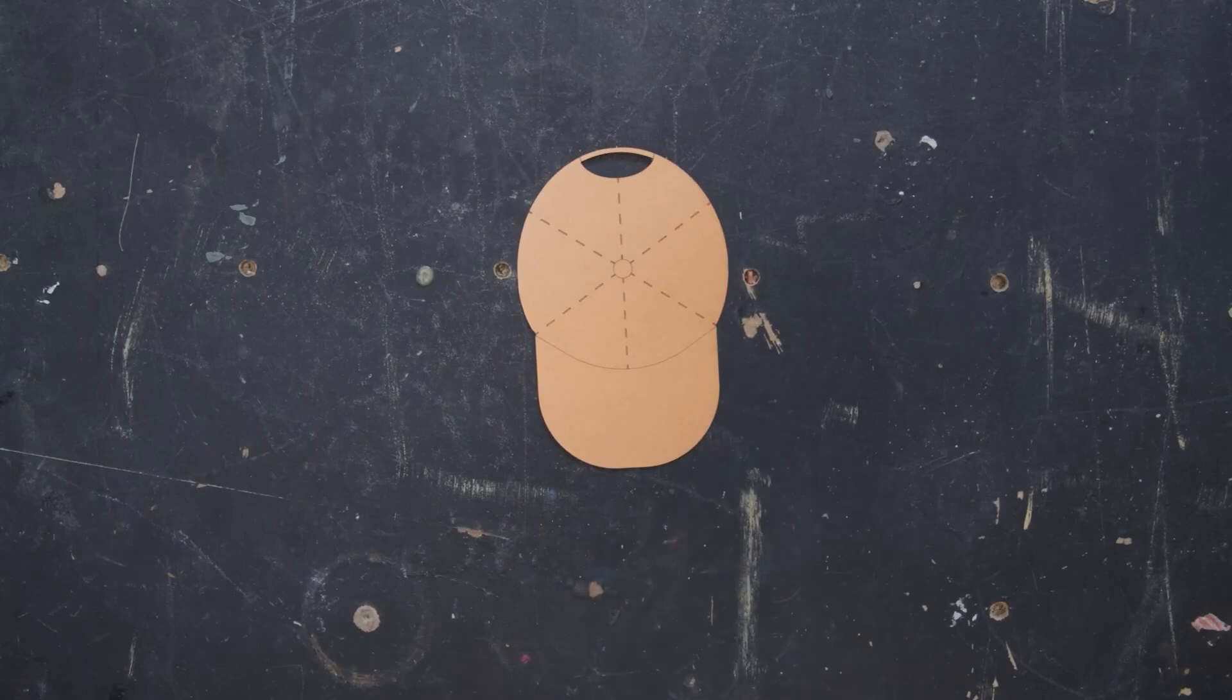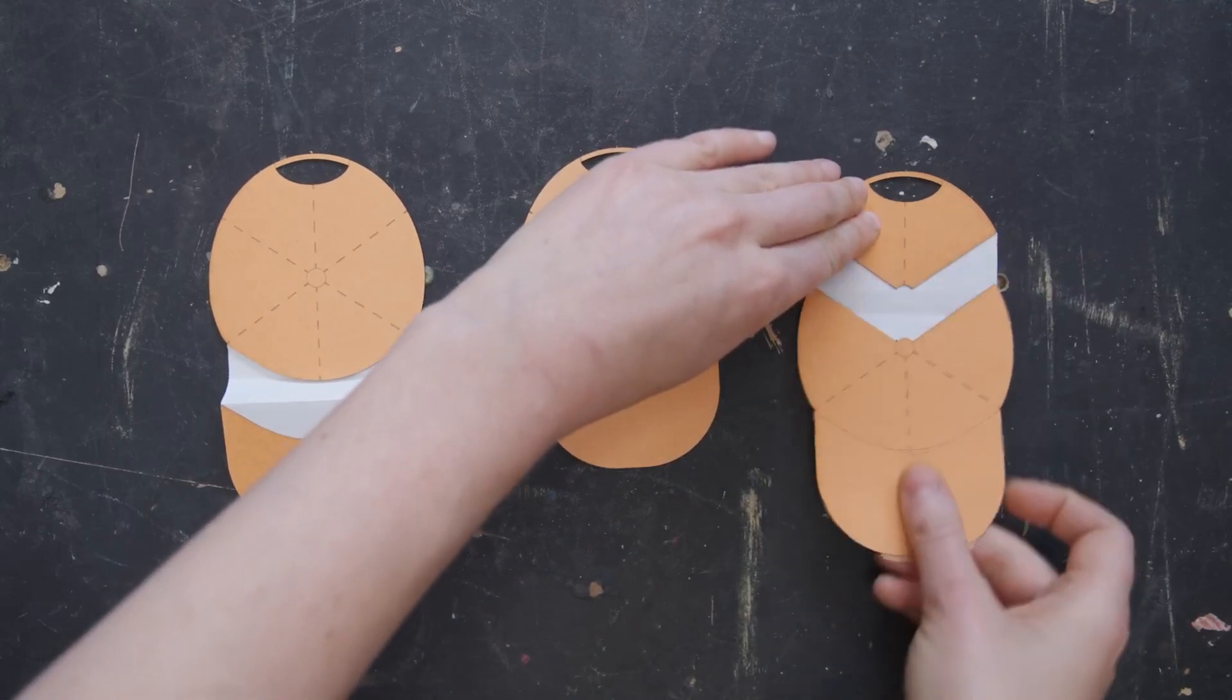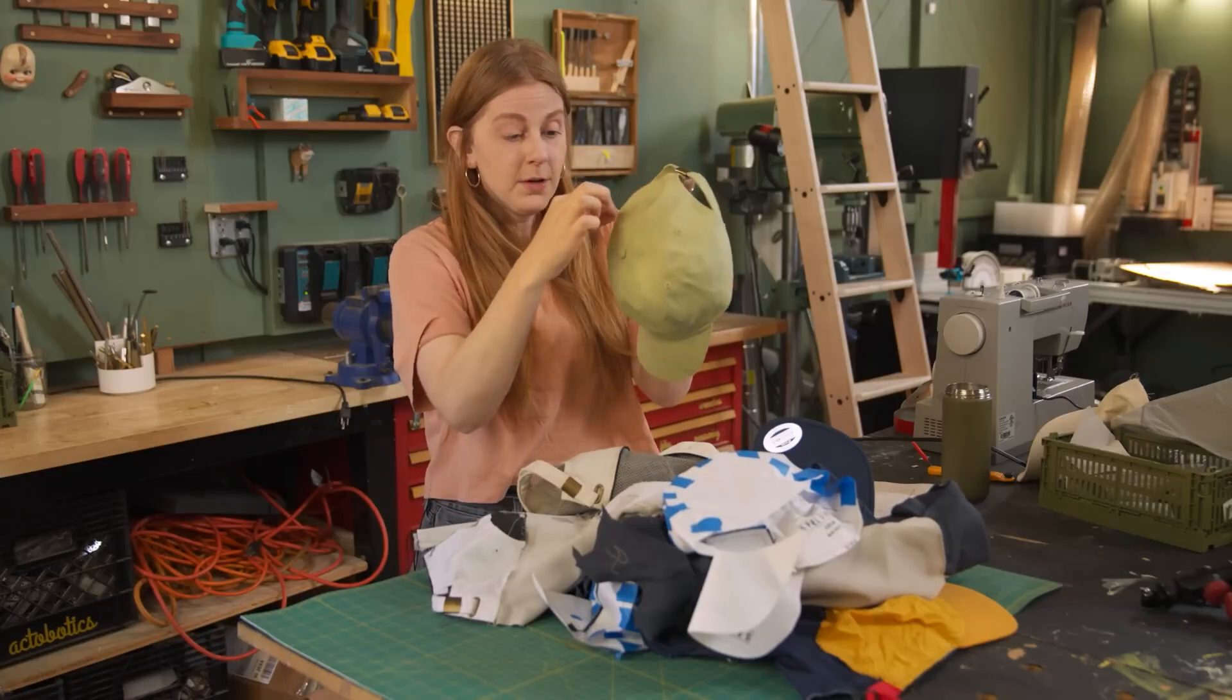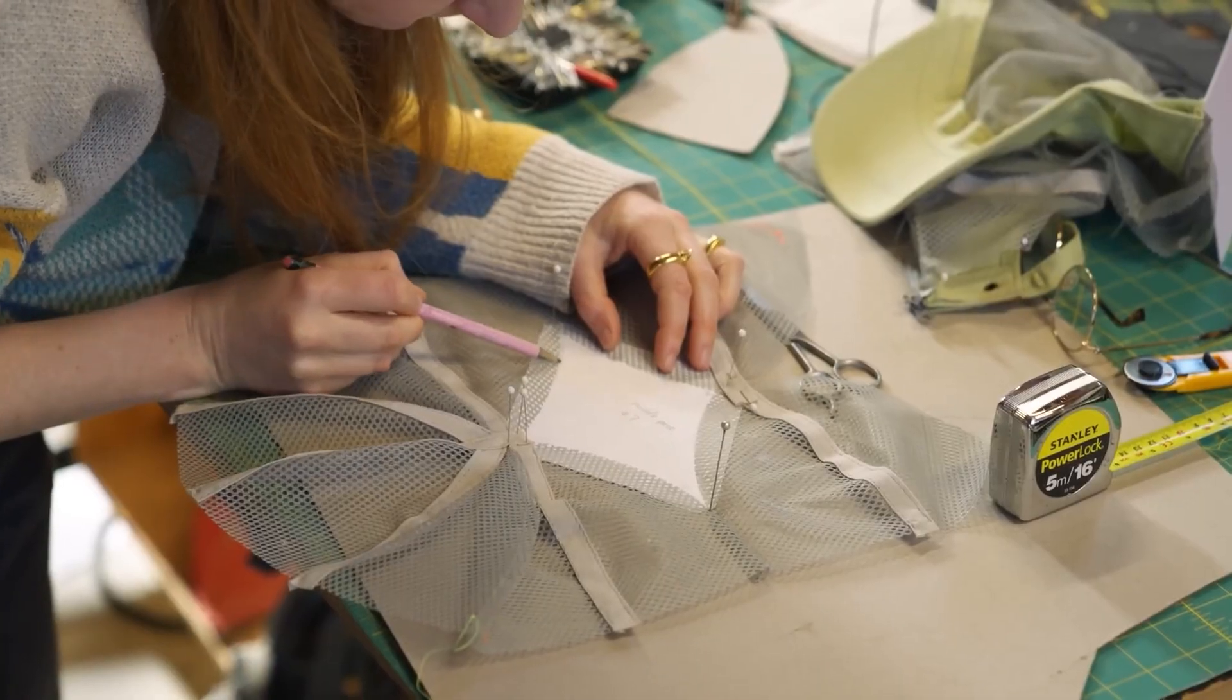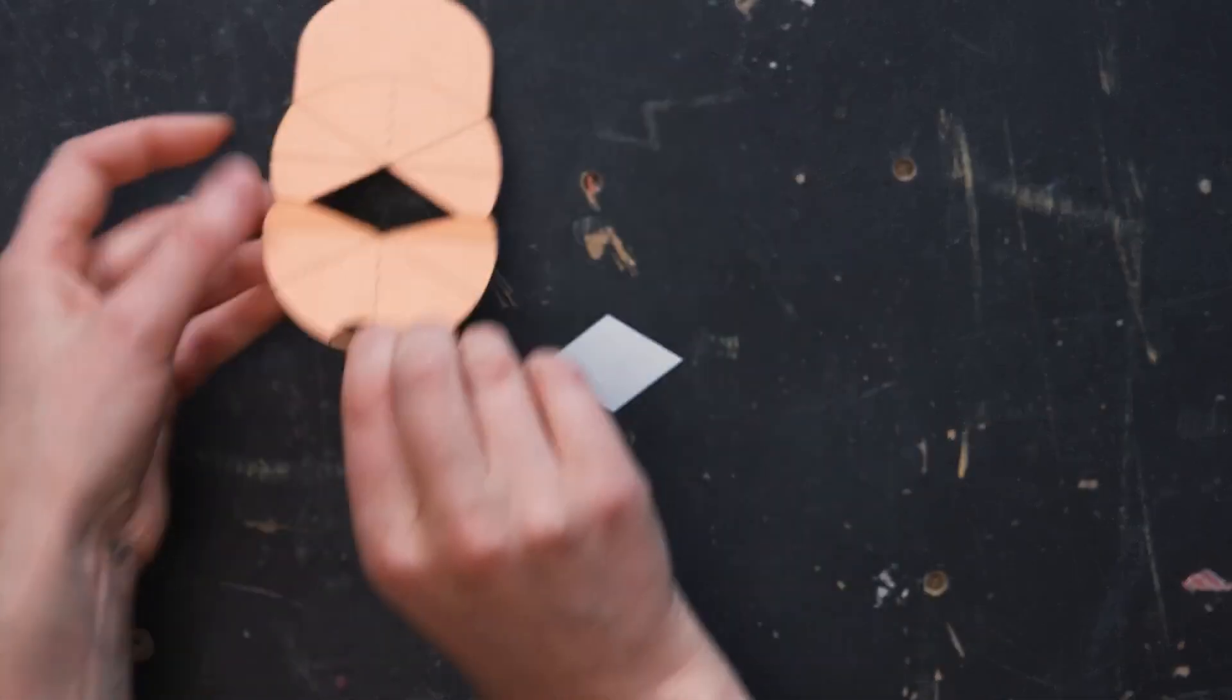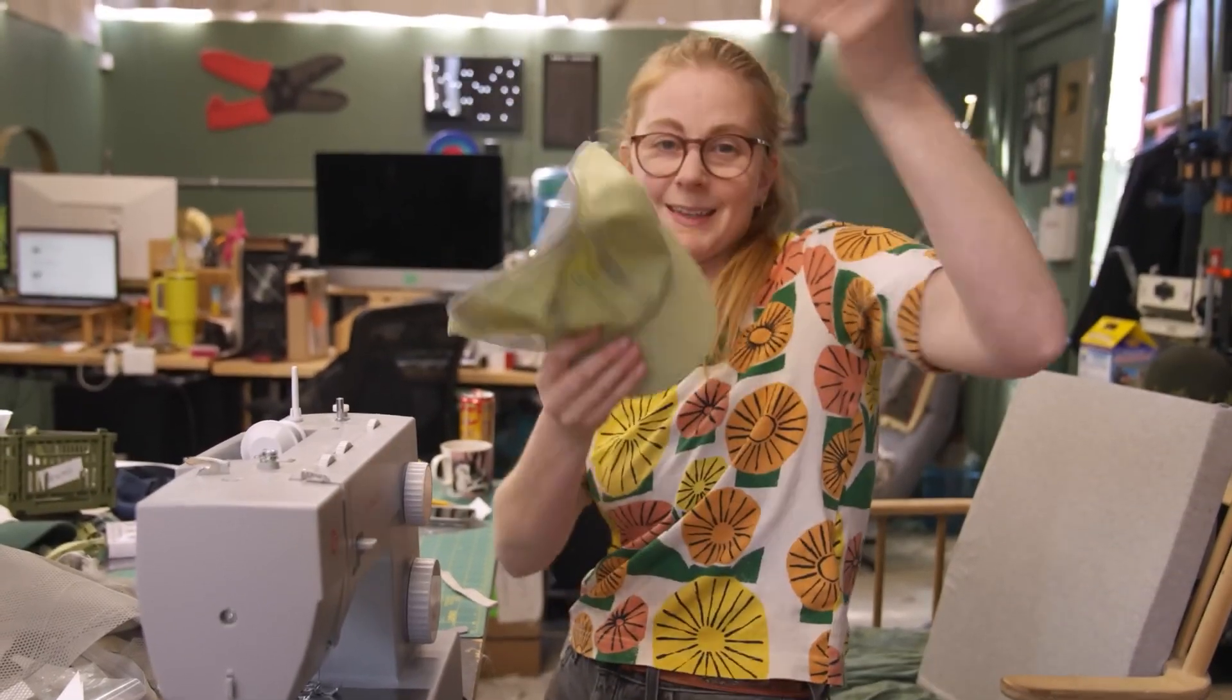The first decision is how is the hat going to split apart so it can unfold into the bag? Should it separate where the bill meets the hat or along the seams on the top? Should the ear flaps fold down to become the handles? It's not an easy problem to solve and there's a ton of trial and error going on here. Typical of Simone's work, she makes her struggle part of the process. After tons of paper and fabric prototypes, plus some moral support from her pets, she's finally moving in a direction towards the finish line.